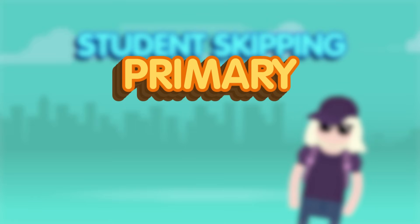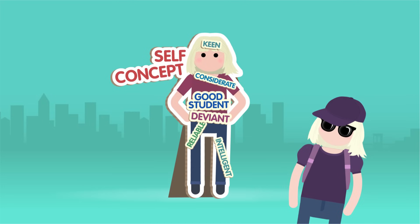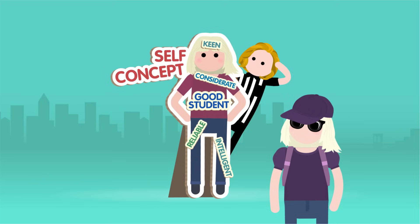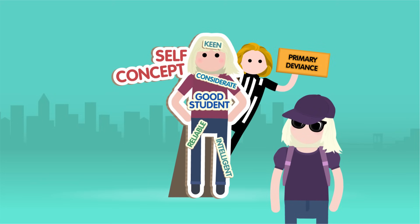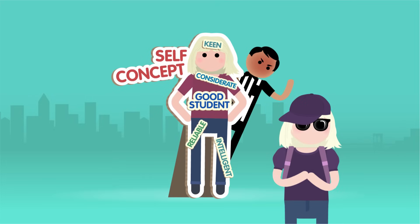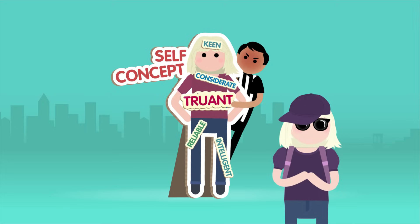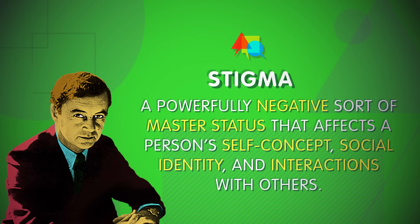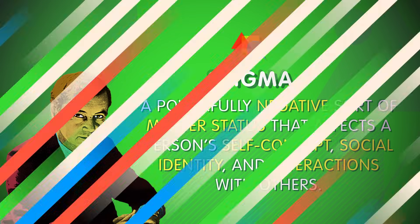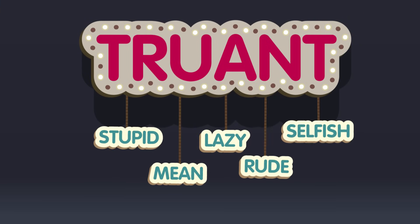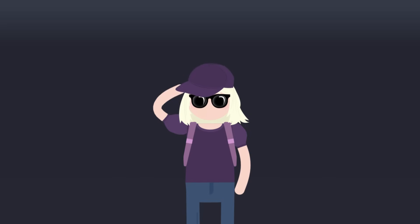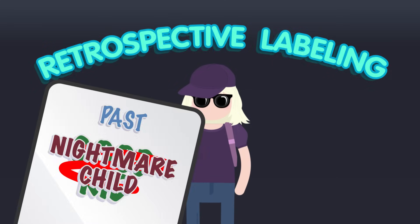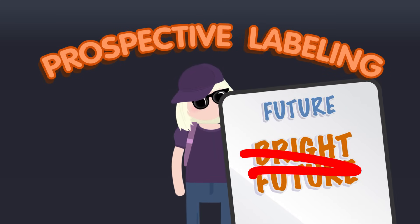Imagine a student skipping school – an example of primary or minor deviance. On its own, the transgression isn't going to affect the student's self-concept or cause her to label herself as a deviant. If she's an otherwise good student, her teacher might just write it off as a one-time thing. But if the teacher responds more strongly and punishes her, that same infraction can escalate into secondary deviance. A strong sanction could make the student start to think of herself as a truant, leading to what Erving Goffman called a stigma – a powerfully negative master status that affects a person's self-concept, social identity, and interactions with others. Stigma leads to more labeling, including retrospective labeling – where her past is reinterpreted so she's suddenly understood as having always been irresponsible – as well as prospective labeling, which predicts her future behavior based on her stigma.